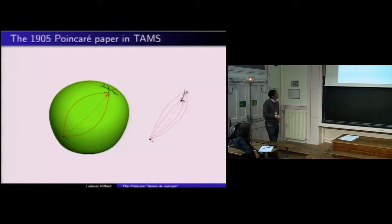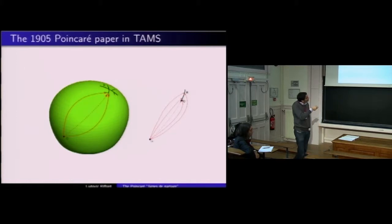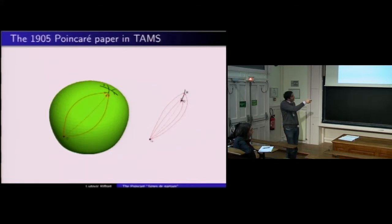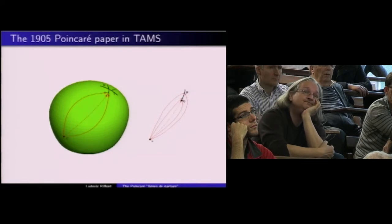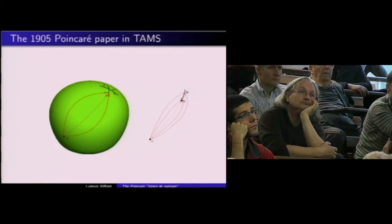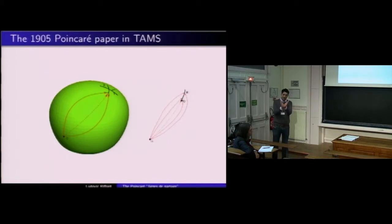Les extrémités des feuilles de notre arbre : si je prends un point Q à l'extrémité d'une feuille, cela signifie que je peux construire des points R aussi proches que je veux de Q qui sont sur les lignes de partage. Pour chaque point R, j'ai deux courbes géodésiques minimisantes allant de O à R. Quand ces points R convergent vers Q, les deux géodésiques convergent l'une vers l'autre.